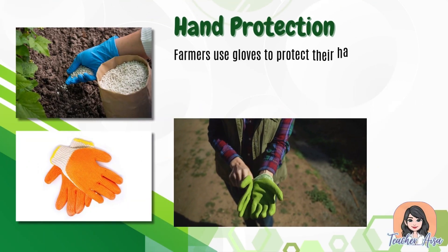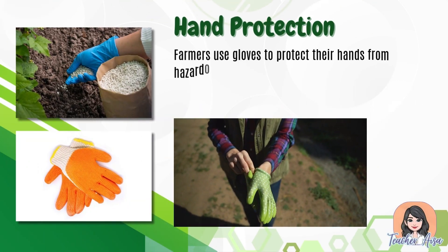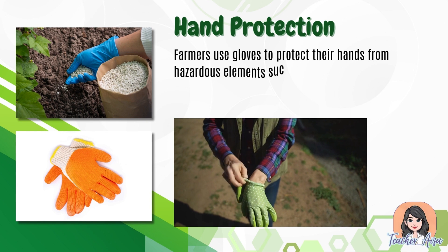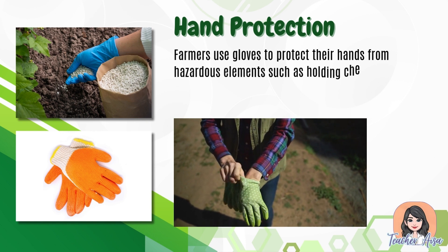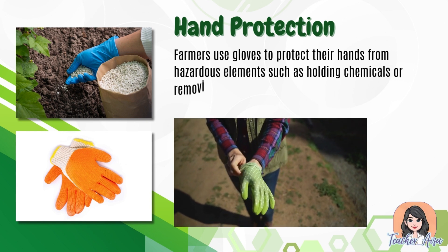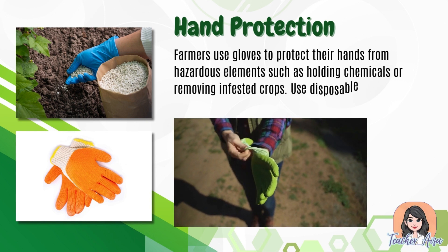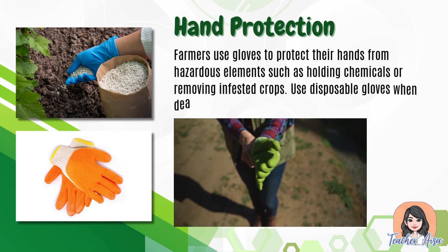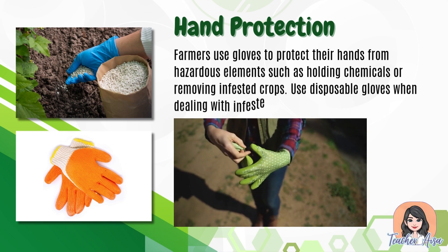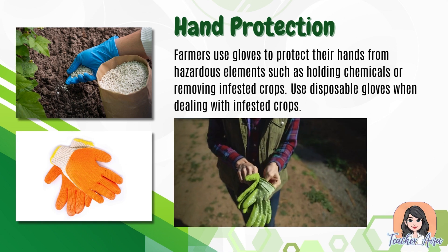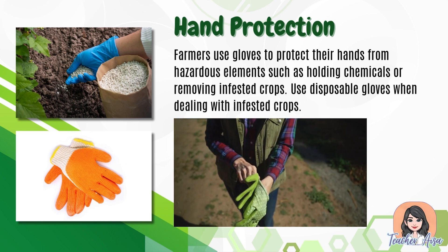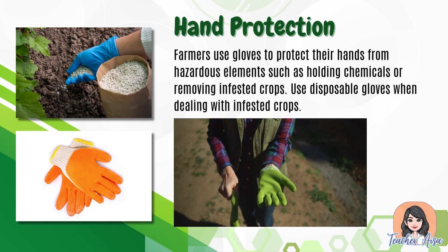Hand protection — farmers use gloves to protect their hands from hazardous elements such as handling chemicals or removing infested crops. Use disposable gloves when dealing with infested crops.